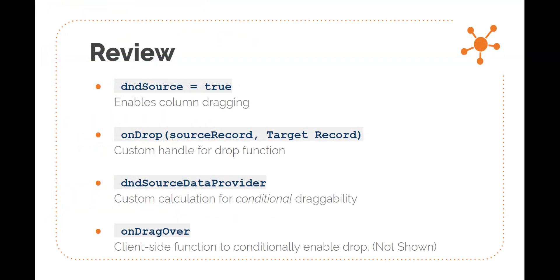Let's quickly recap the main points. First, any column in a grid may be made draggable by setting the D&D Source property to true. Custom logic can be implemented in the OnDrop event handler, which gives you the row that was dragged and the row on which it was dropped. Dragging can be made conditional by giving a D&D Source Data Provider — this can be a calculation, column, or variable which returns a Boolean value to enable dragging. This is optional.